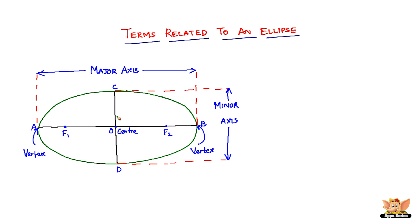The line segment through the foci of the ellipse is called the major axis. The line segment through the center and perpendicular to the major axis is called the minor axis. A-B is called the major axis and C-D is called the minor axis. The endpoints of the major axis are called the vertices of an ellipse — points A and B. Individually, each is called a vertex; vertices is the plural form of vertex.